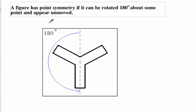Now let's look at the definition of point symmetry. Point symmetry exists when a figure can be rotated 180 degrees about some point, it doesn't matter which point, and appear unmoved.